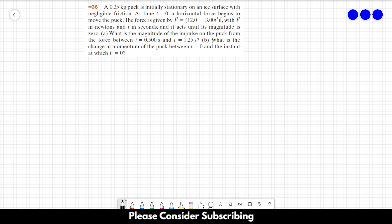and it acts until its magnitude is 0. Letter a: what is the magnitude of the impulse on the puck from the force between t equals 0.5 seconds and t equals 1.25 seconds? Letter b: what is the change in momentum of the puck between t equals 0 and the instant at which F equals 0?